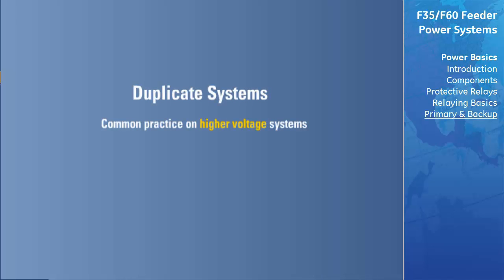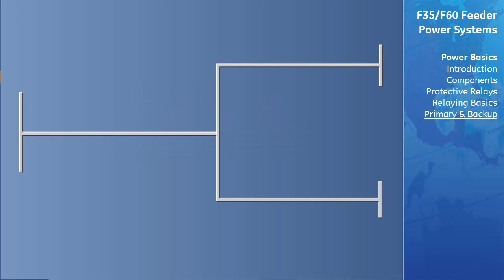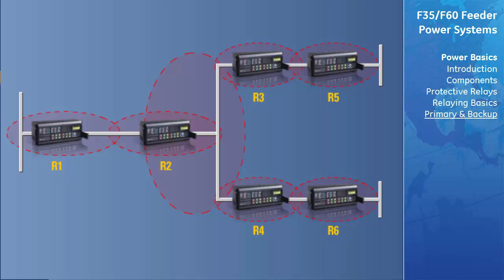On high-voltage systems, it is common practice to duplicate the protection systems to ensure proper operation if a failure occurs. In some cases only the relays are duplicated, while in other cases the entire protection system is duplicated — the preferred choice when economically justifiable. Let's take a look at several backup strategies within one power system transmission line. Relays R1 through R6 are the primary relaying, the D group of relays is the duplicate system, and the L group is the local backup relaying.